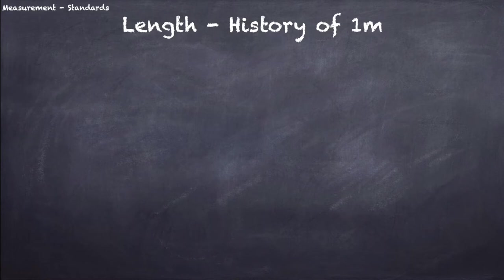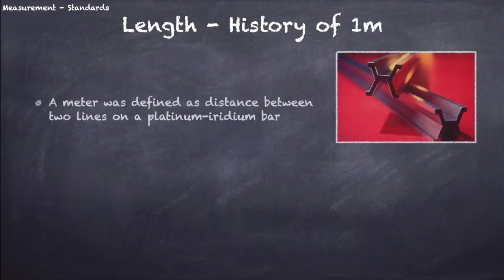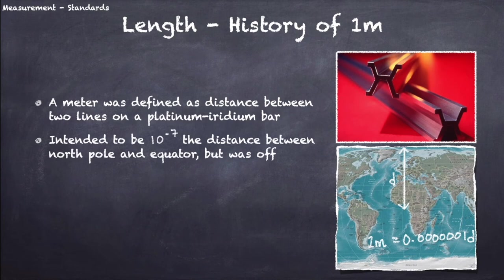Let's start with the standard used to define one meter. Remember, meter is the SI unit of length. A meter was originally defined as the distance between two lines on a platinum iridium bar, much like how a ruler works. For historical reasons, this distance was intended to be about 10 to the power of minus 7 times the distance from the North Pole to the equator along the meridian line through Paris, but it was off by 0.023%. Not only is this standard not exactly what it intended to be, but this standard is not ideal for at least two more reasons.